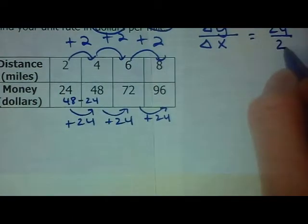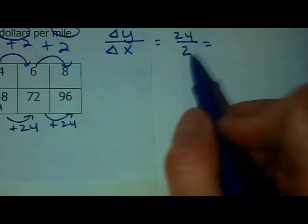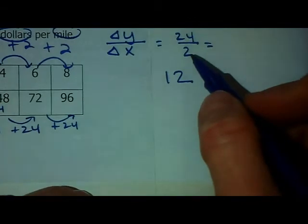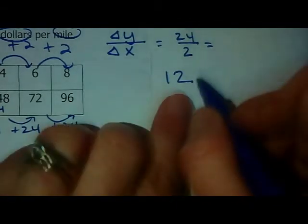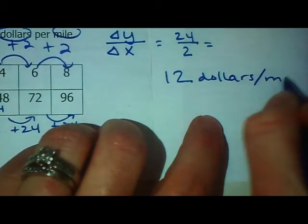To figure out the unit rate we just learned you divide the top by the bottom. 24 divided by 2 is 12. This means that walking for a charity earns you 12 dollars per mile.